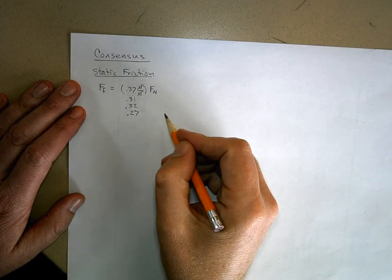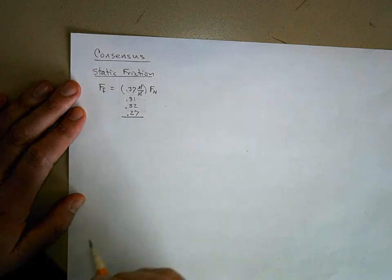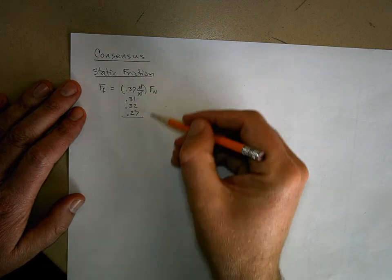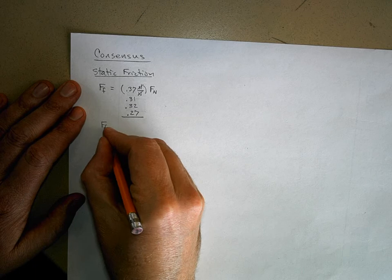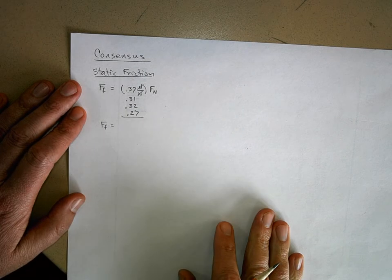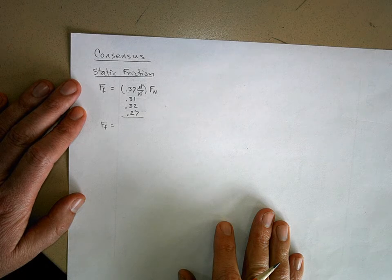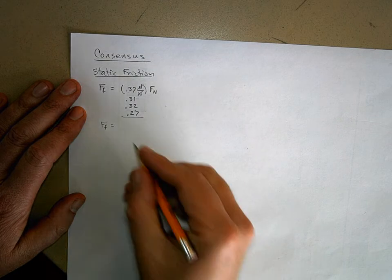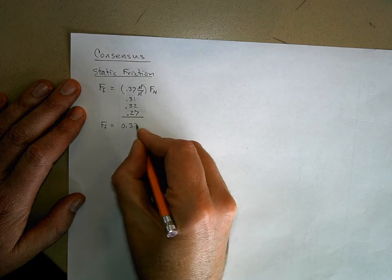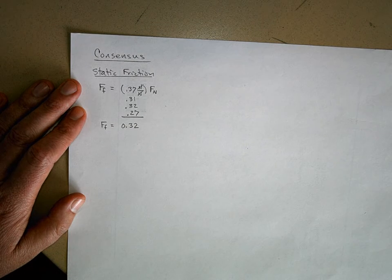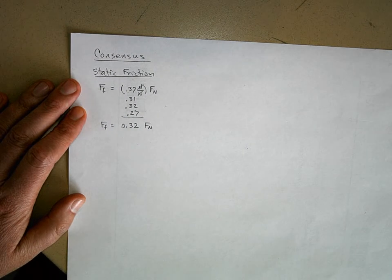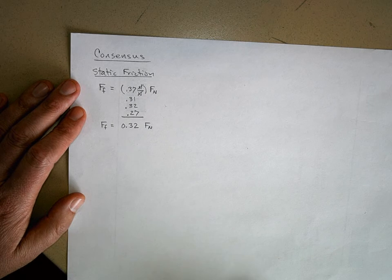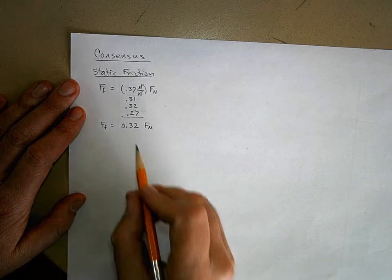That's static friction, so let's figure out an average. Someone with a calculator, figure out what the class average slope was. The average is 0.3175 — I'll round it to 0.32. This is about what the last period got; they got 0.33, so 0.32 is pretty good agreement. The last digit is kind of a guess anyway.